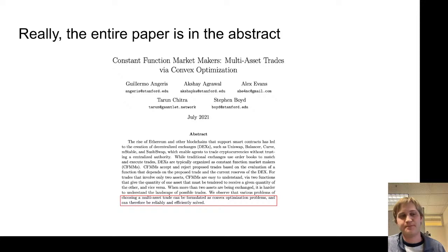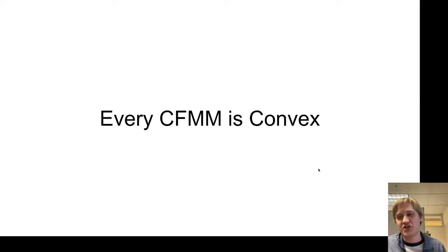This is related to the fact that constant function market makers are always these convex things. And because of this, you can always solve them using off-the-shelf solvers. So let's take a look at what this means and why this is the case. Why is it the case that every constant function market maker is convex, and what are all the possible constant function market makers you can think of?